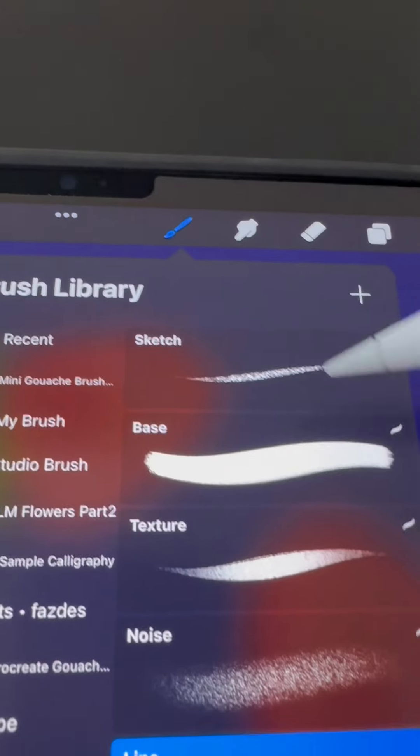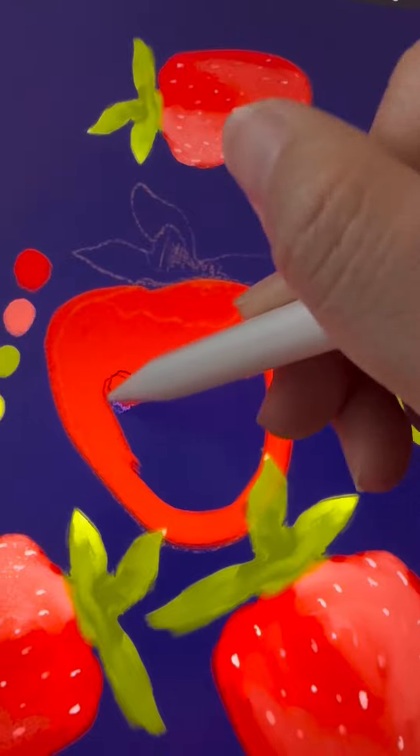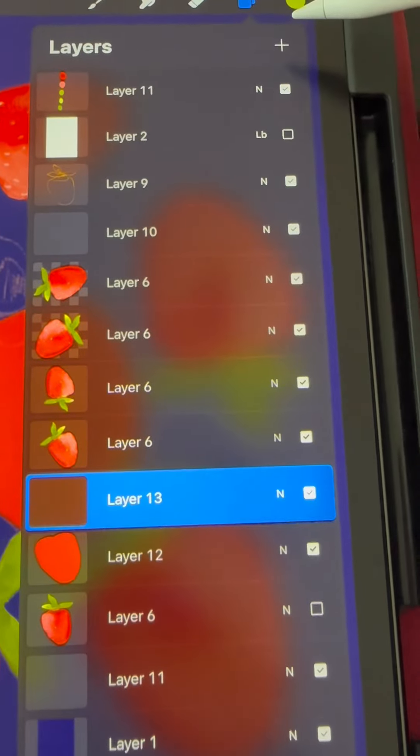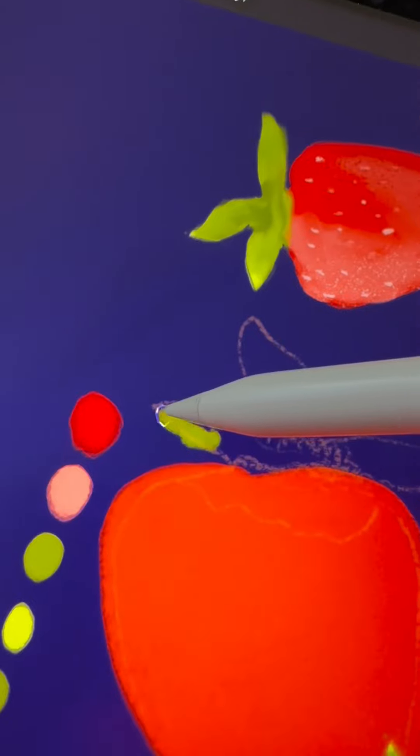Let's paint a strawberry. Start with a base brush, pick a red color, and put on your base layer. Next, you're going to create a layer on top of your base layer and continue working on the stamp.